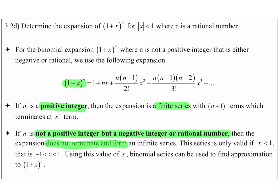So, dia tak akan terminate dan dia akan ada infinite series. This series is only valid if |x| < 1 — that is, x is between negative 1 and 1. Series ini juga akan valid sekiranya modulus x ni kurang daripada 1 iaitu x is between negative 1 dan 1. Using this value of x, the binomial series can be used to find an approximation to (1 + x)^n.